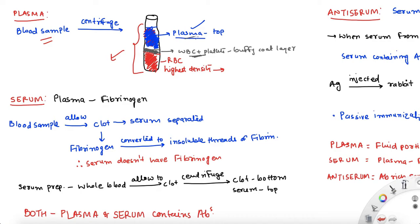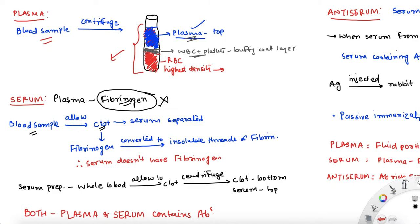So plasma is the liquid portion of the blood that contains fibrinogen. When it comes to serum, serum is nothing but plasma devoid of fibrinogen — it is plasma which does not have fibrinogen. How do we make it in the lab? When you take a blood sample, you simply let it clot. It will clot because normal blood has plasma and plasma has fibrinogen, so clotting will occur.